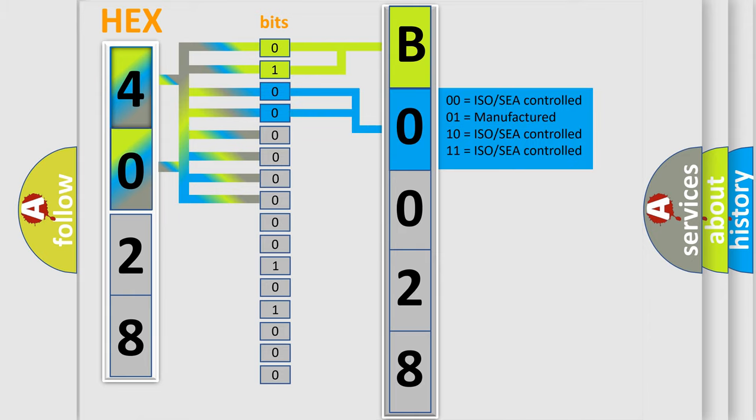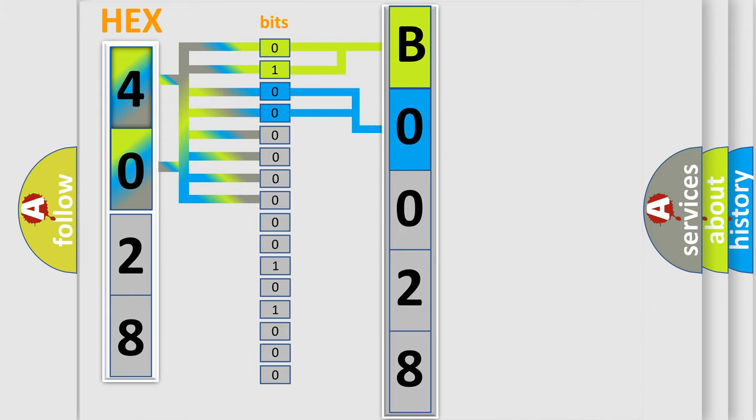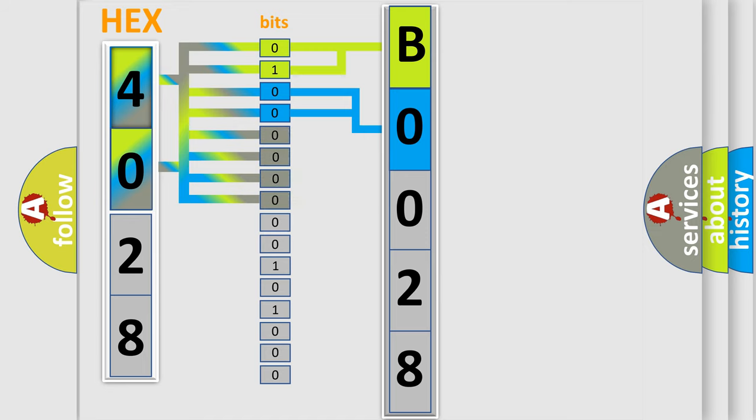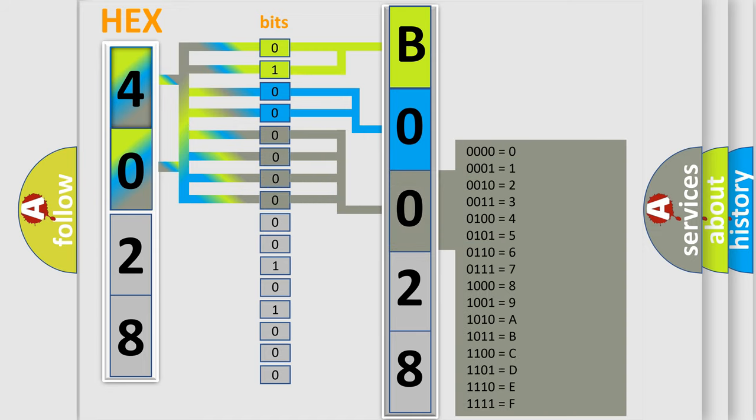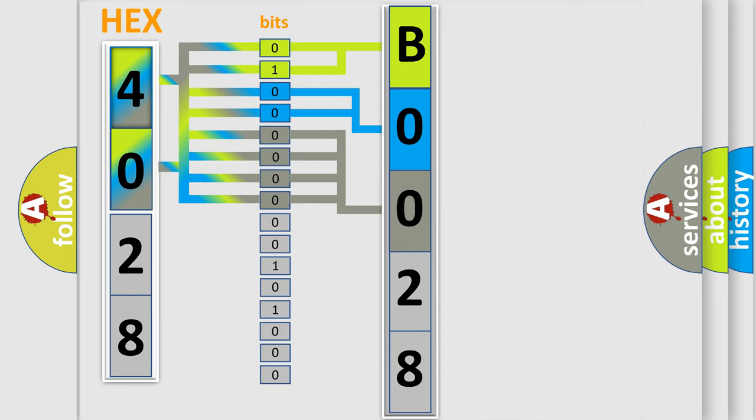A single byte conceals 256 possible combinations. We now know in what way the diagnostic tool translates the received information into a more comprehensible format.